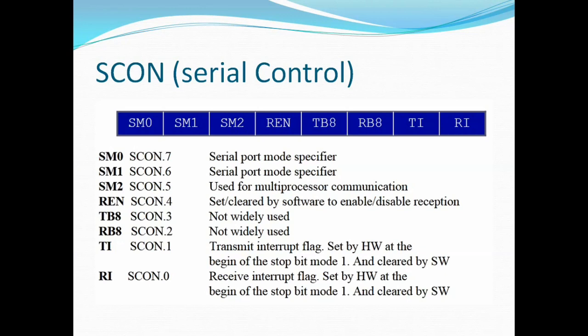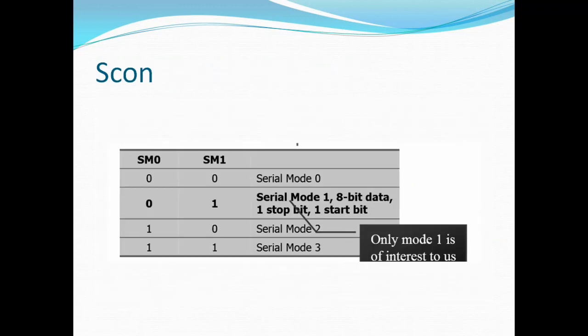Let us start with bits SCON.7 and SCON.6, that is SM0 and SM1. These two bits are for serial port mode specification. In serial communication there are four different modes, and for selecting a particular mode we use SM0 and SM1.